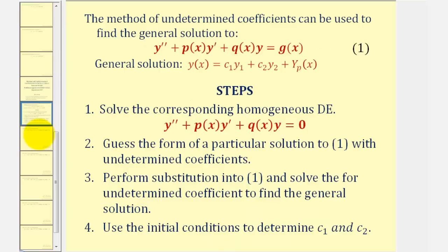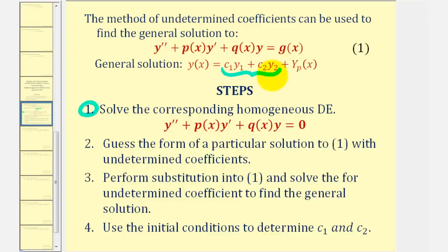To solve the initial value problem of a differential equation in this form, we'll first find the general solution, given by y of x. Then we'll find the values of c sub one and c sub two using the initial conditions. To use the method of undetermined coefficients, we start by solving the corresponding homogeneous differential equation, whose solutions give us the first two terms of the general solution — this is often called the complementary function.